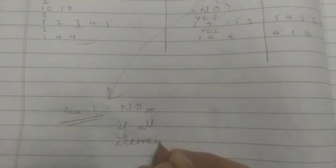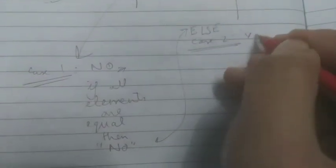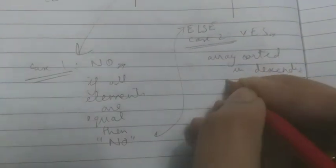So what we basically need to do: first check for case one — NO. If all elements are equal then output NO. Otherwise case two is YES.